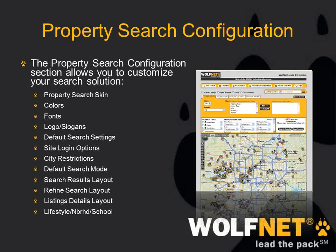The search results layout is basically when someone performs a search, you want them to come up in a list or in a grid view. The refined search layout — there's a refined search box on search results that can be moved to the top, side, or removed from the search completely. There are also a couple of options to customize the listing details layout, as well as the lifestyle, neighborhood, and school searches.